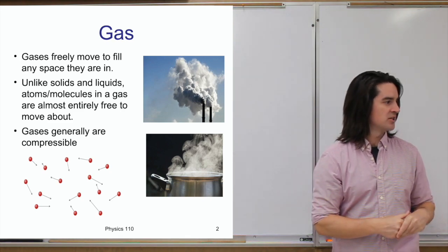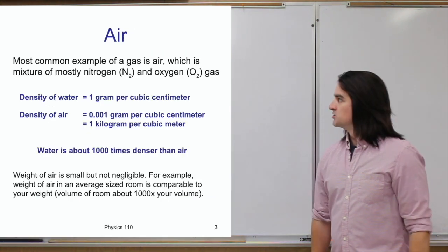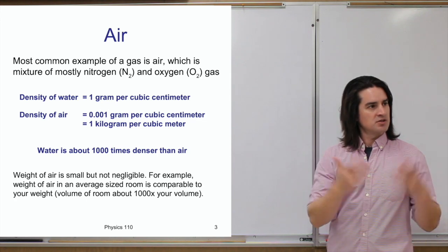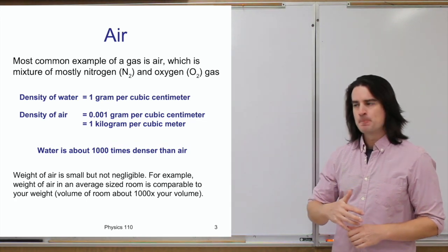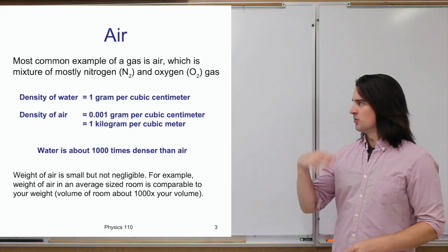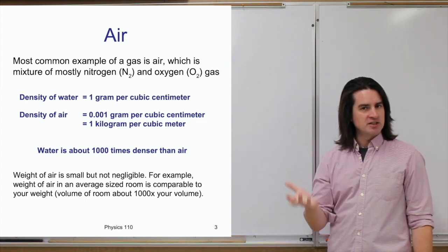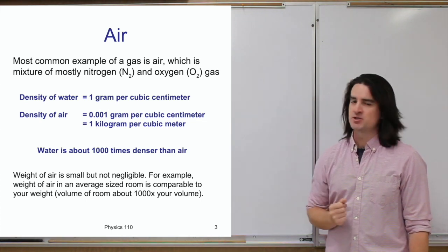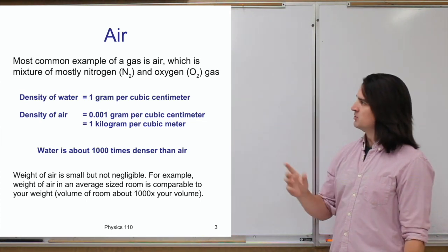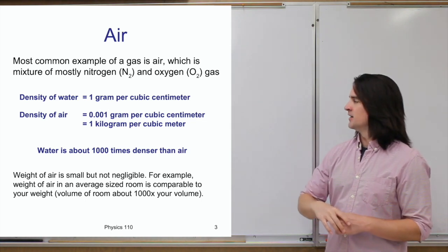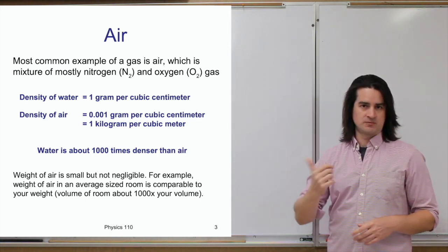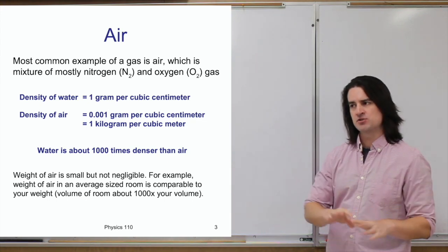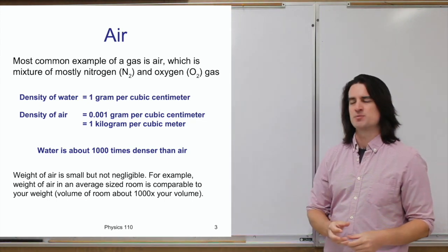The air that we're breathing, all around us, is a gas — the most common form of gas we experience. It is made up mostly of nitrogen, dinitrogen N2, and oxygen O2. It's a mixture of those gases mostly, with other trace gases in there as well, but for the most part it's nitrogen and oxygen.